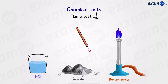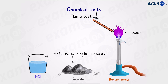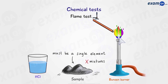Now we're ready to take a sample and place it over the blue flame of the Bunsen burner. Depending on the colour we can identify which metal is present in the sample. Now this test will only work if we have a single element in the sample. It will not work for mixtures because if we have different metals they will mask each other and as a result we will not be able to correctly identify which metal was present.